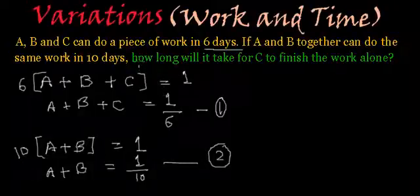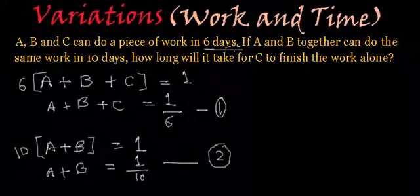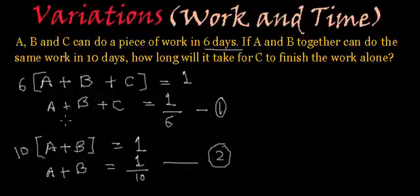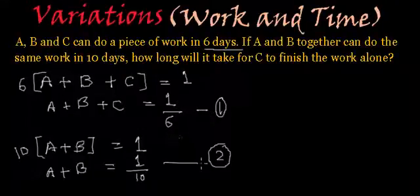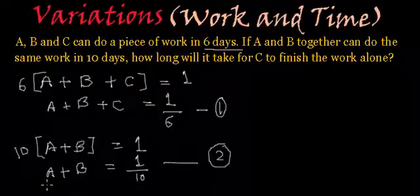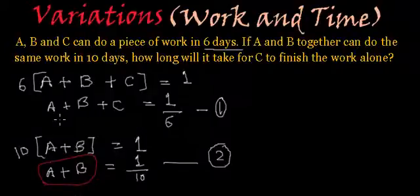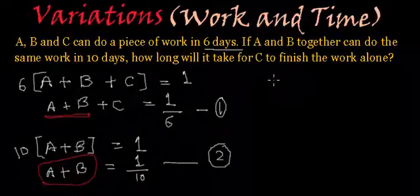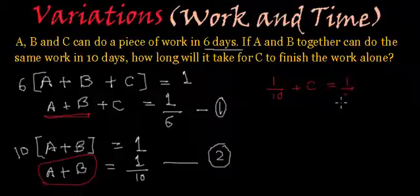Now what we have to do? They are asking how long will it take for C to finish the work alone? So to find the time taken by C to finish the job, we have to find the value of the working capacity of C. And if you see these two equations carefully — in the first equation we have A plus B plus C equal to one by six, and in the second equation we have A plus B equal to one by ten. So if we substitute this value of A plus B from equation two into equation one, we will get one by ten plus C is equal to one by six.